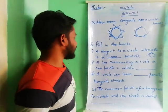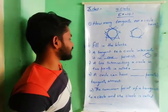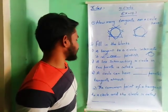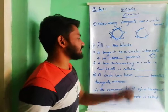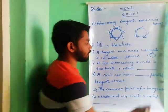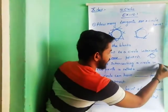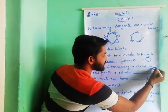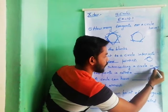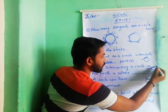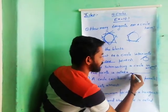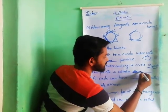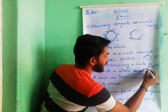A line intersecting a circle in two points is called a secant line.